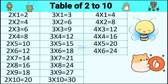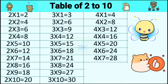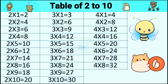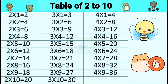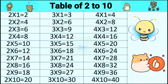4 sevens are 28, 4 eights are 32, 4 nines are 36, four tens are forty.